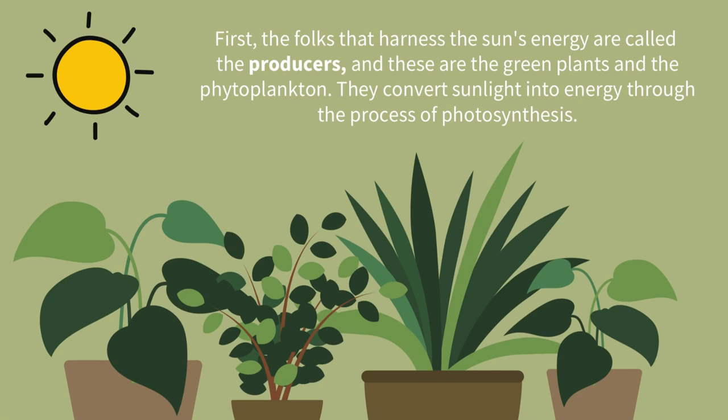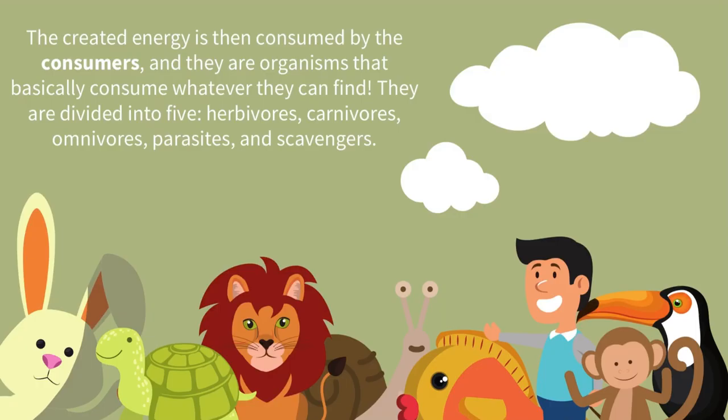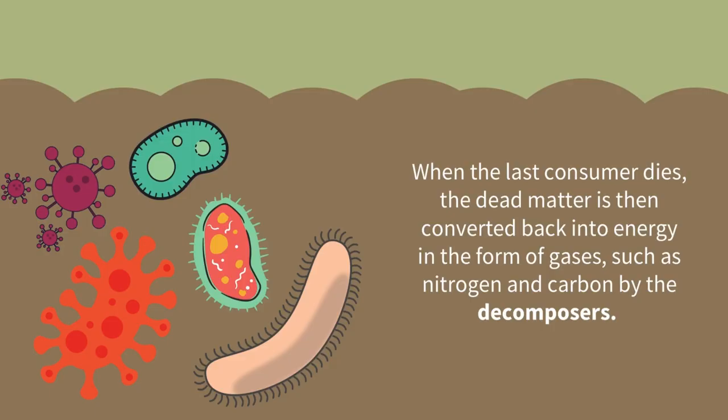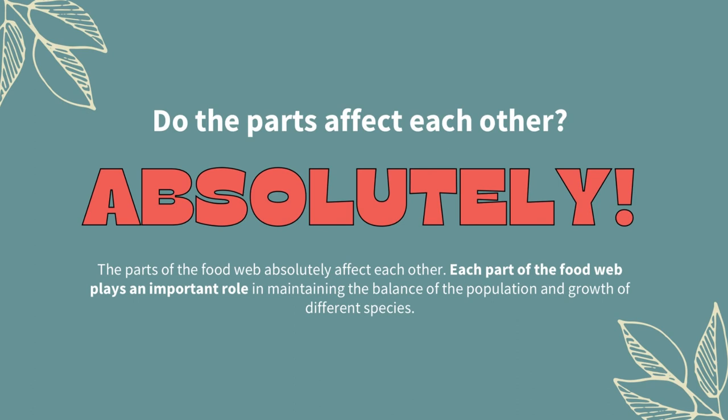The folks that harness the sun's energy are called the producers, and these are the green plants and the phytoplankton. The created energy is then consumed by the consumers, and they are organisms that basically consume whatever they can find. When the last consumer dies, the dead matter is then converted back into energy in the form of gases, such as nitrogen and carbon, by the decomposers.